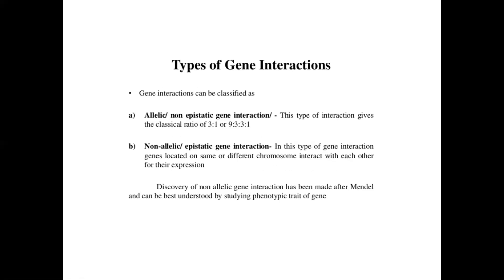Now, the types of gene interactions. One is allelic, or non-epistatic, and another is non-allelic, that is epistatic. Allelic interaction gives the classical ratio of 3:1 or 9:3:1 — from Mendel's law we recall 3 tall and 1 dwarf giving the 3:1 ratio. The particular character which maintains this type of ratio is known as allelic or non-epistatic type of interaction.